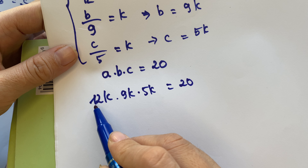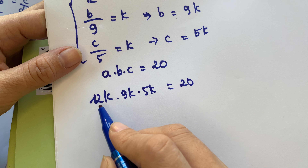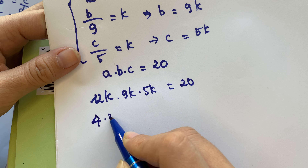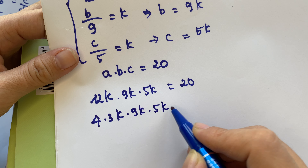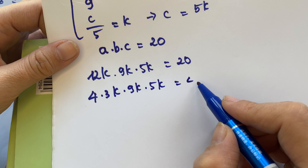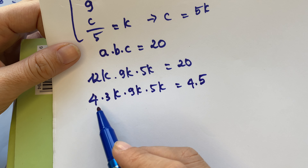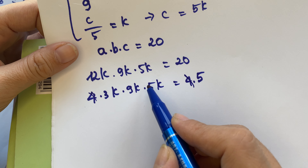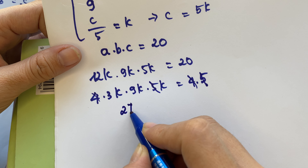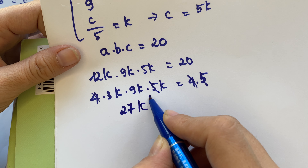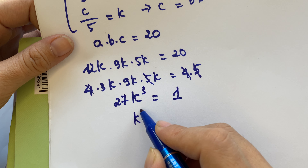You need to simplify both sides. We have 12 equals 4 times 3, so 12k times 9k times 5k equals 20, which is 4 times 5. Cancel 4 from both sides and 5 from both sides, leaving 3 times 9 equals 27, and k cubed equals 1 over 27.